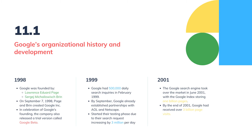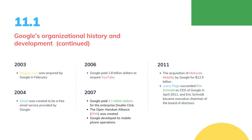In 2001, the Google search engine took over the market in June, with the Google index storing 1 billion pages. By the end of 2001, Google had received over 3 billion page visits. In February 2003, Blogger.com was acquired by Google. In 2004, Gmail was created as a free mail service. At the end of 2006, Google paid $1.8 billion for YouTube, the world's most popular online video portal. In 2007, Google paid $3.1 billion for the enterprise DoubleClick.